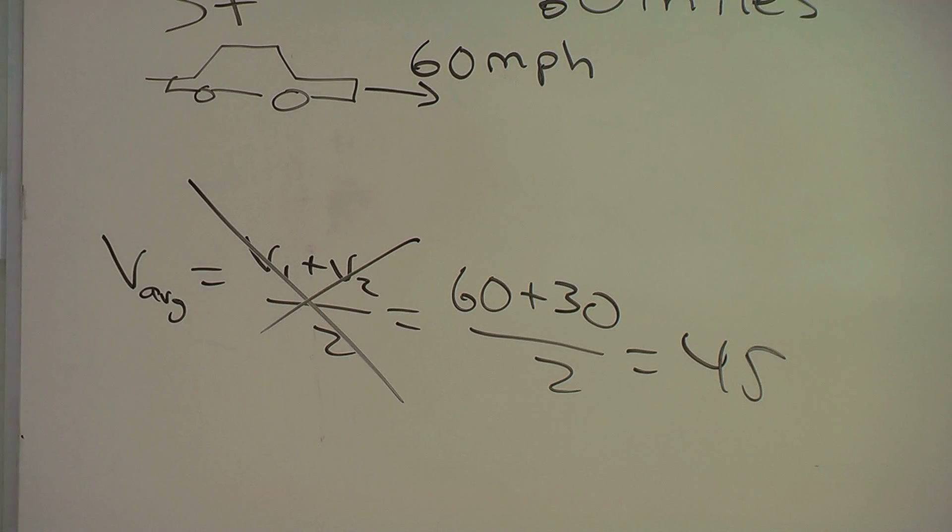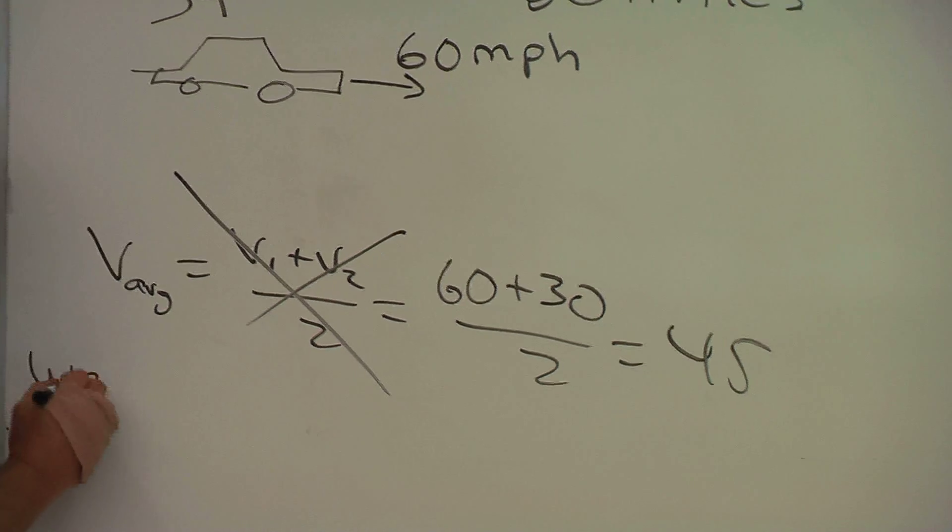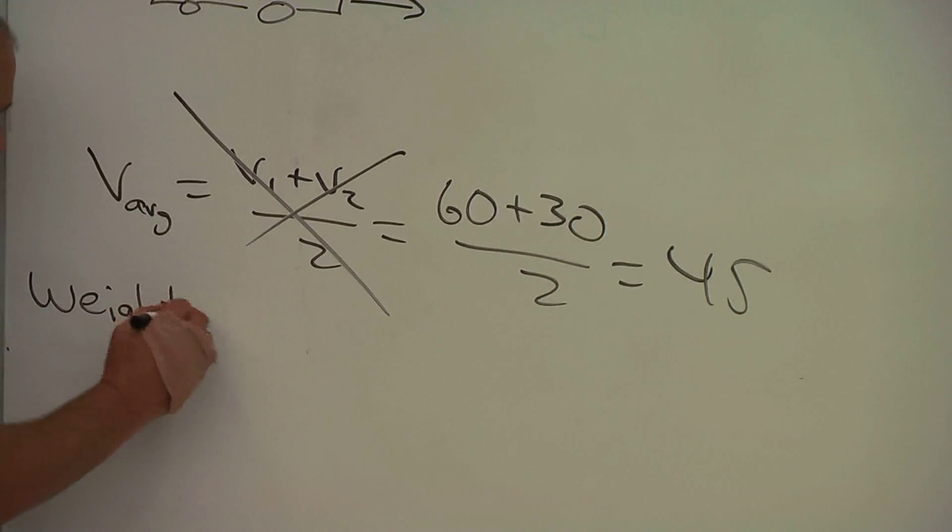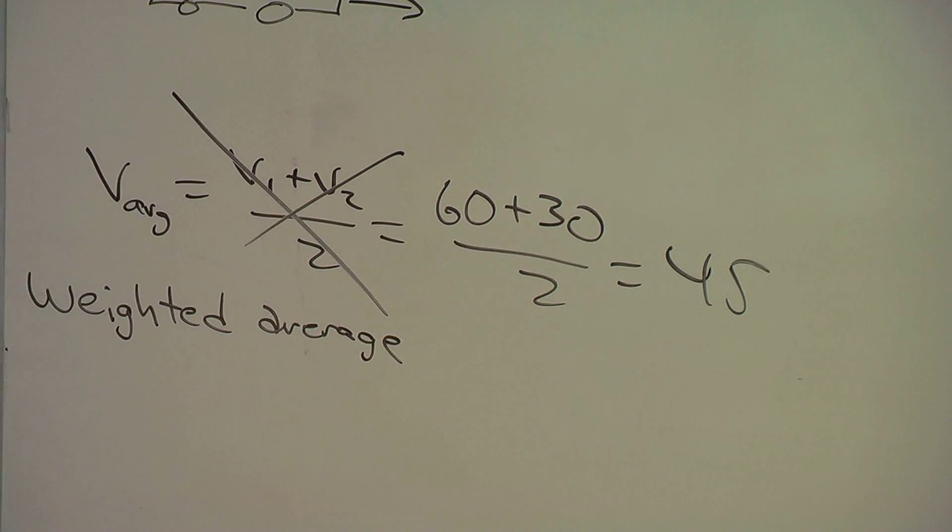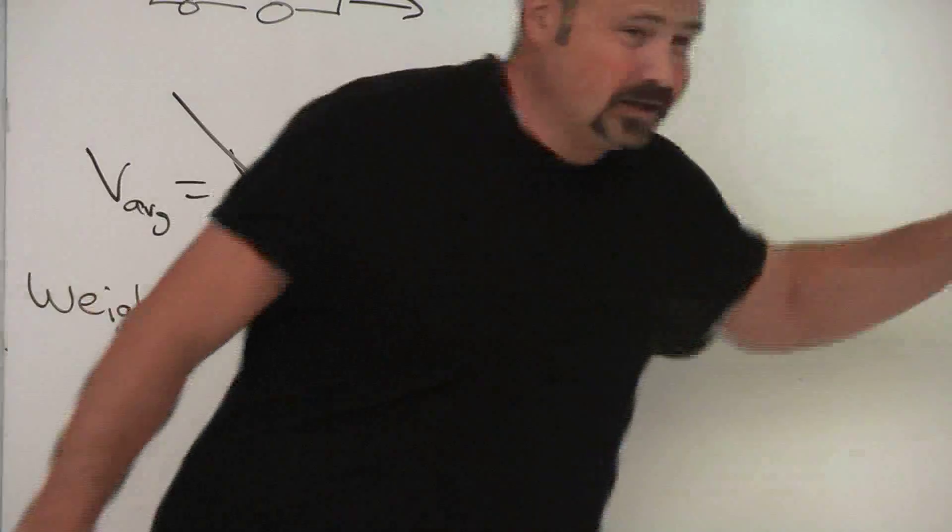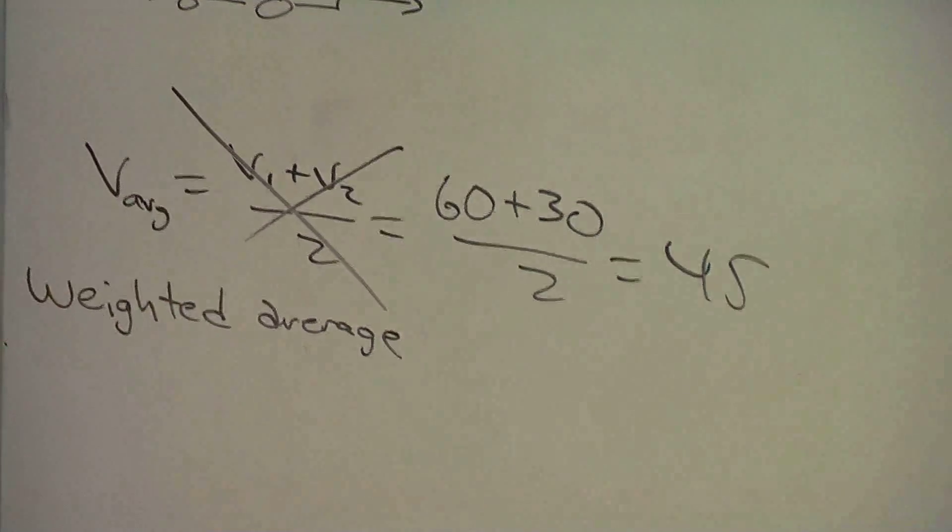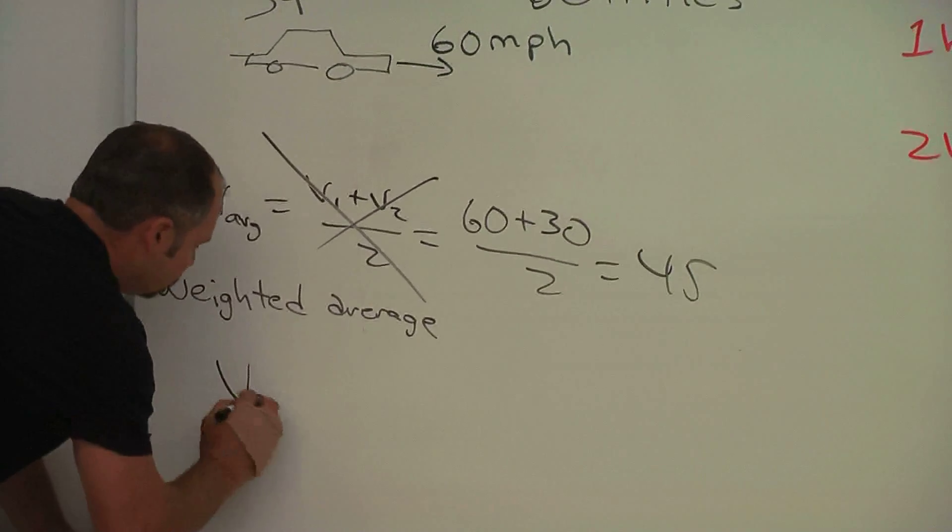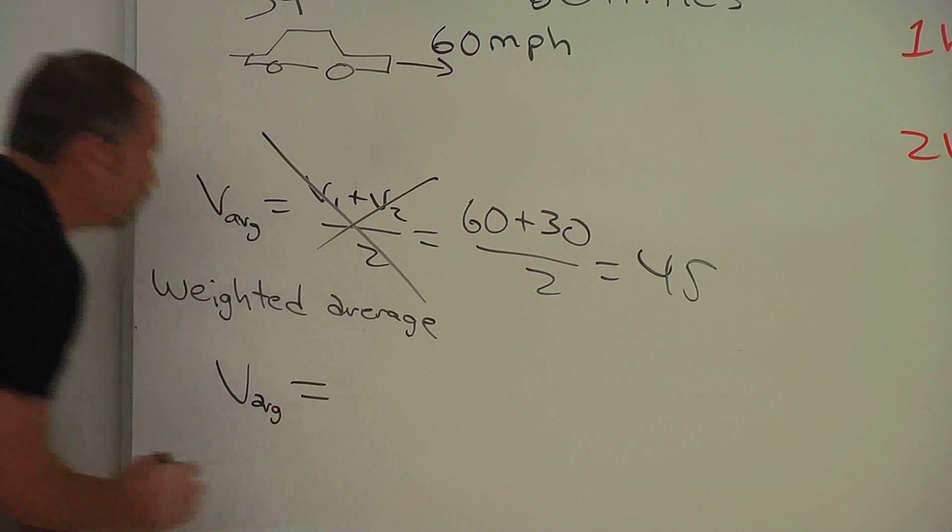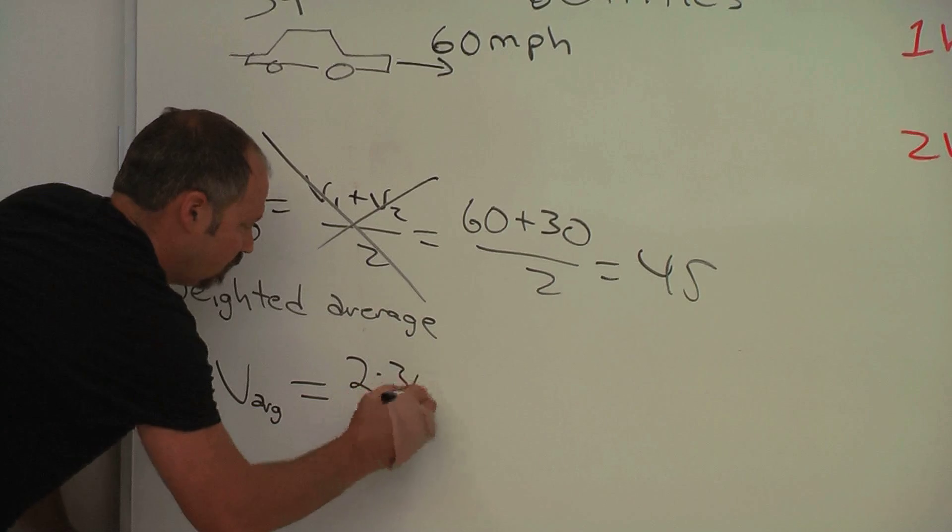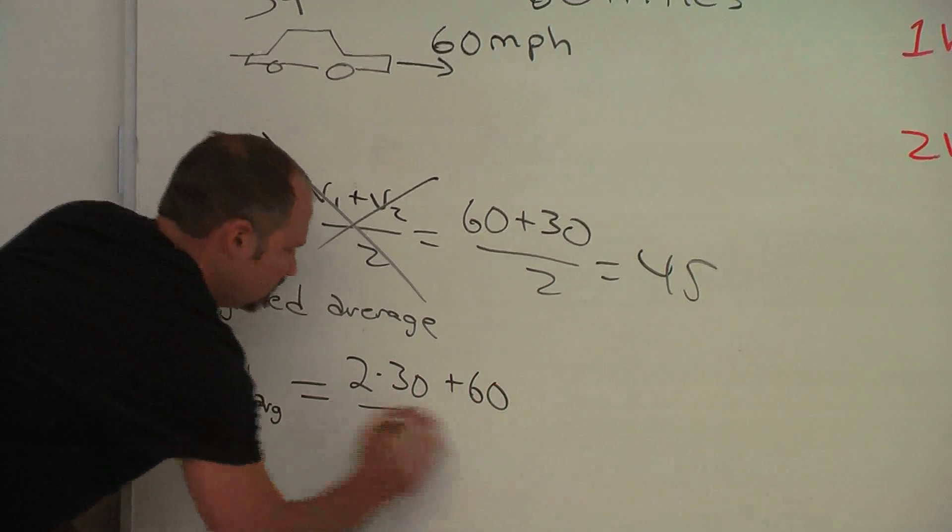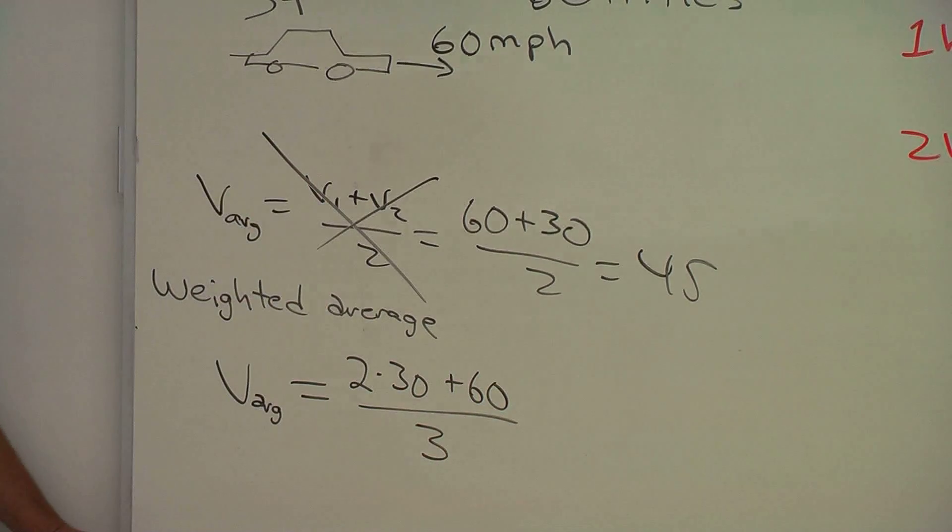What you have to do is do something that's called a weighted average, because one number is more important than the other, and that's the 30, because you spent more time at 30. So what you would want to do is this. Well, you spent twice as long at 30, so you got 2 times 30 plus 60, and then all divided by 3.